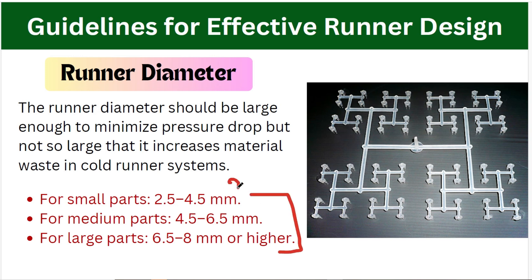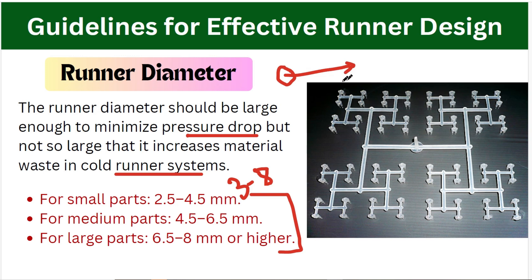In the previous video I mentioned 3 to 8 mm as a general guideline for the runner. It depends on the material, size of the part, and the flow required or the balancing of the flow. The runner diameter should be large enough to minimize the pressure drop, but not so large that it increases material waste in the cold runner system. In cold runner systems, the gate and runner are ejected along with the parts, so runner size should be kept to a minimum to save material.